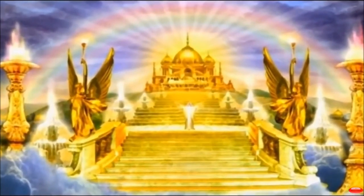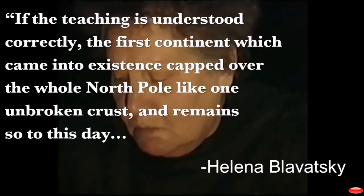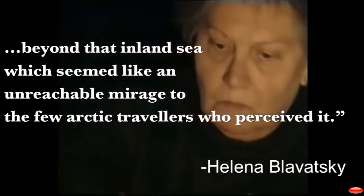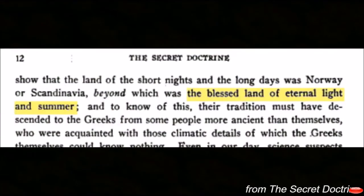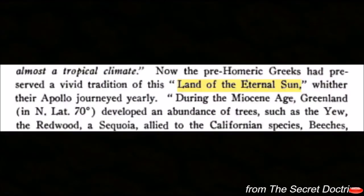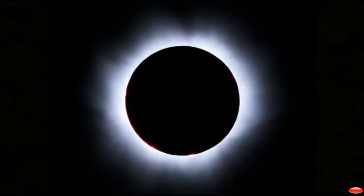In Blavatsky's cosmogony, the first root race was created from pure spirit and lived at the North Pole. This sacred land is stated never to have shared the fate of the other continents, because it is the only one whose destiny is to last from the beginning to the end. While every race has been and will be destroyed, this first race remains existing and flourishing today, housing the original divine consciousness — the cradle of the first man and the dwelling of the last divine mortal. Blavatsky writes: 'The first continent which came into existence capped over the whole North Pole like one unbroken crust, and remains so to this day, beyond that inland sea which seemed like an unreachable mirage to the few arctic travelers who perceived it.' Terms such as 'the blessed land of eternal light and summer' and 'the land of the eternal sun' throughout theosophy literature refer to this continent and to the central sun, which neither sets nor rises in this imperishable land.